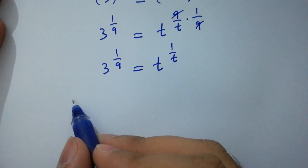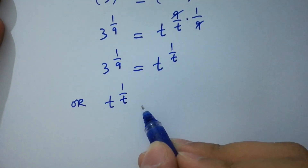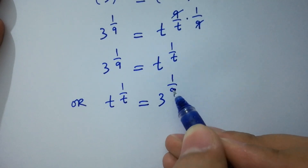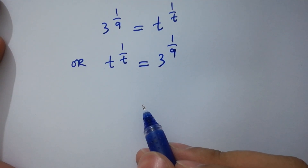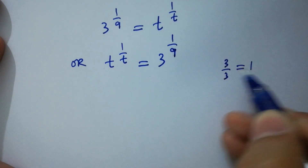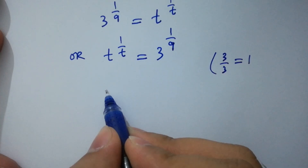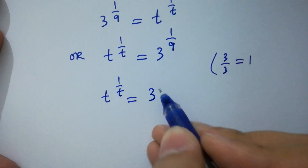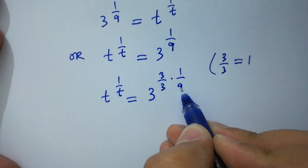Or 3 to the power 1 over 9. In the next step, as we know, 3 over 3 equals 1. Then this step is the same as t to the power 1 over t equals 3 to the power 3 over 3, times 1 over 9.